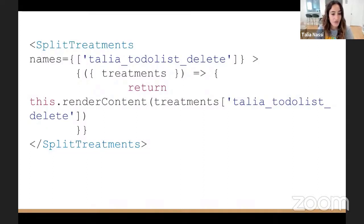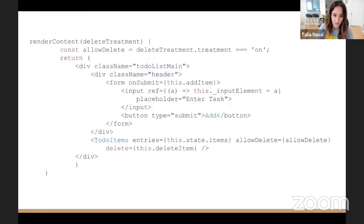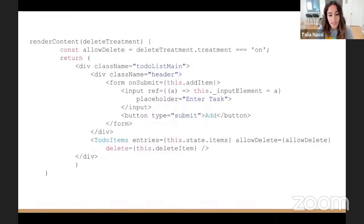SplitTreatments is a React component that performs feature evaluation, and we're going to use this in our render function. The withSplitFactory higher-order component is used to wrap the to-do list component when I export it. So I split my render function in two. In the first one, I return the treatment and configuration from SplitTreatments, and in the names prop I pass in the name of my feature flag created from the UI — this must exactly match the name you inputted while creating your split. In the second render function, I created a variable named allow delete that differentiates between treatment on and off. If the treatment is on, you're allowing the user to delete tasks; if off, there is no option to delete.